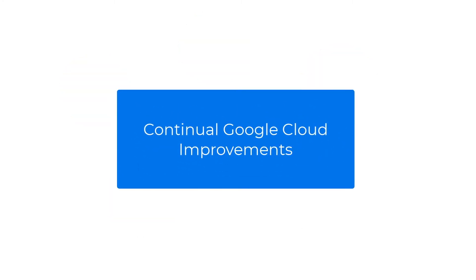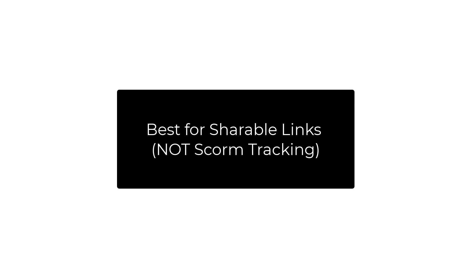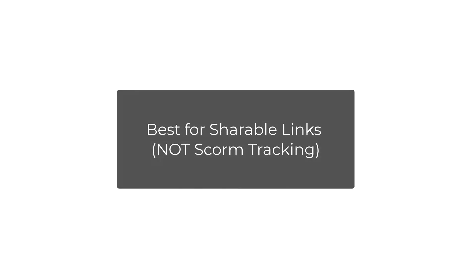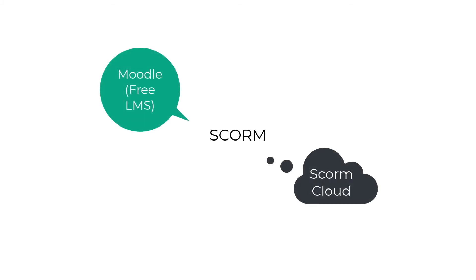As we go through this tutorial, keep in mind that Google is constantly improving their tools, so your screen might look slightly different than what you see here. Also, this method is best for creating publicly shareable links, not for SCORM tracking. If you need a way to track learner results with SCORM, you may want to consider a free LMS like Moodle, or perhaps try SCORM Cloud instead.